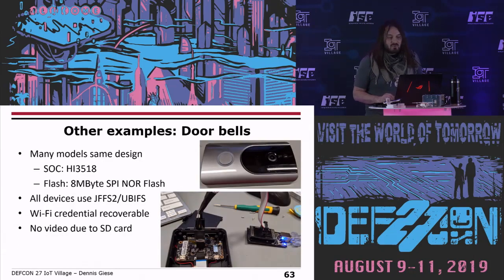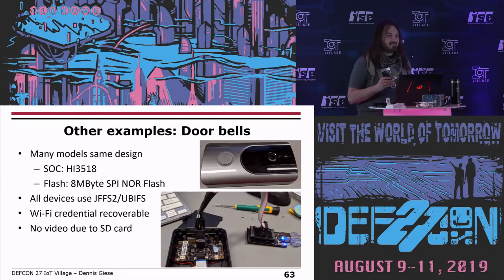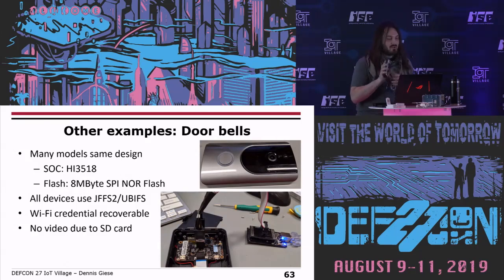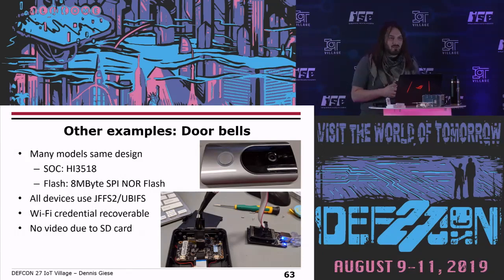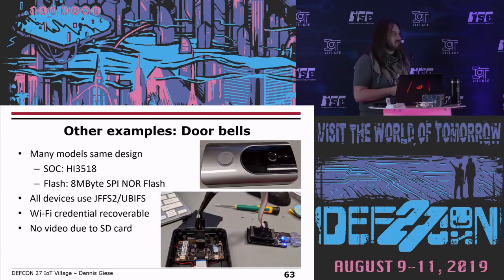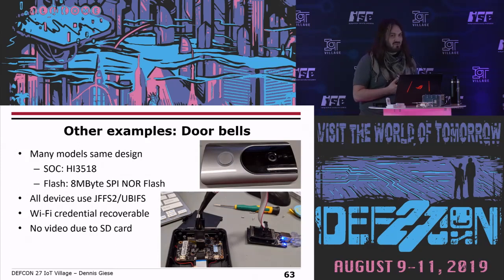Another example: I now have about eight doorbell cameras, and seven of them appear to share the same SDK internally — same hardware with different exteriors. Most are based on the HiSilicon Hi3518 chip, use SPI NOR flash with JFFS2 and UBIFS, so credentials are easily recovered. They have some log files with one MAC address of the Wi-Fi access point, making location tracking somewhat harder. Unfortunately these devices have SD card slots for video storage, so video data wasn't in the flash itself.